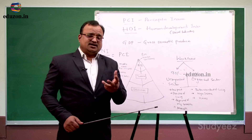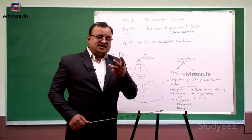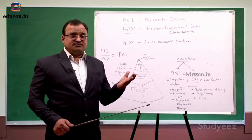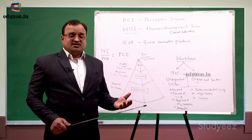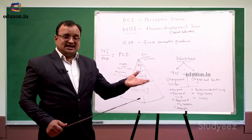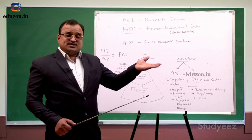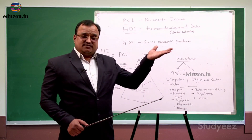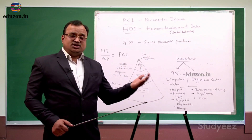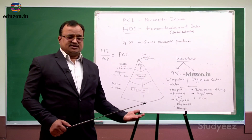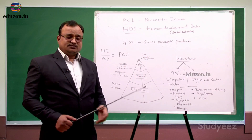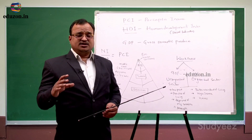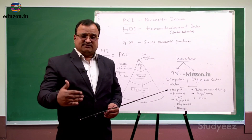Per capita income is a very essential indicator of economic development of a country. We can analyze exactly where a country stands — whether it is a developed country, a developing country, or an underdeveloped country. So, per capita income is one of the major indicators of development.